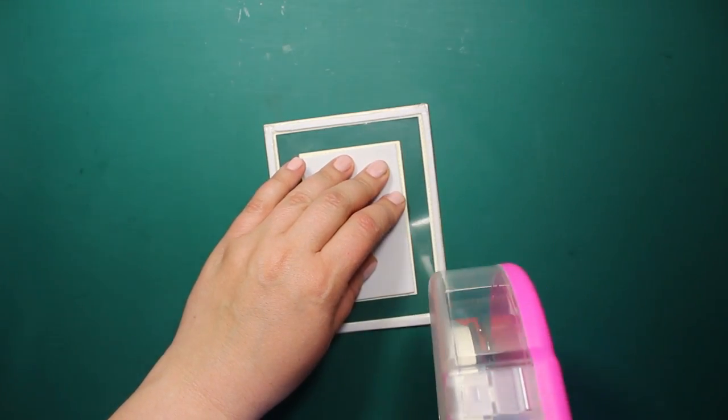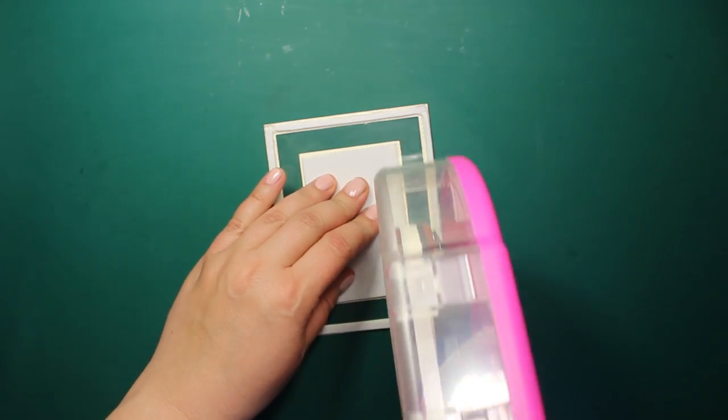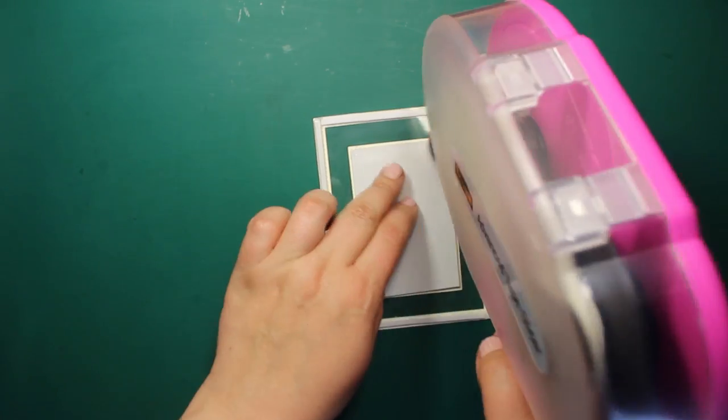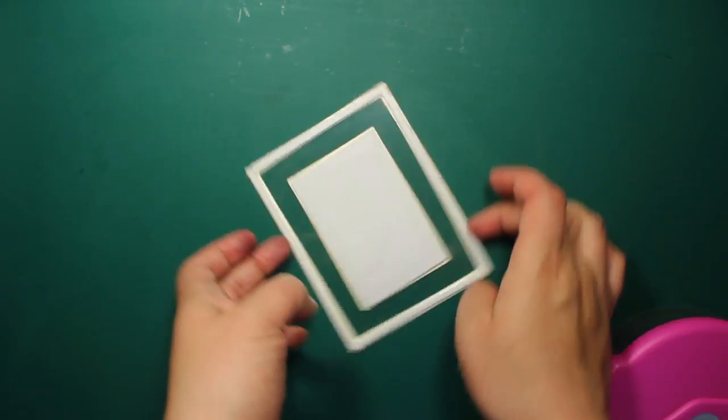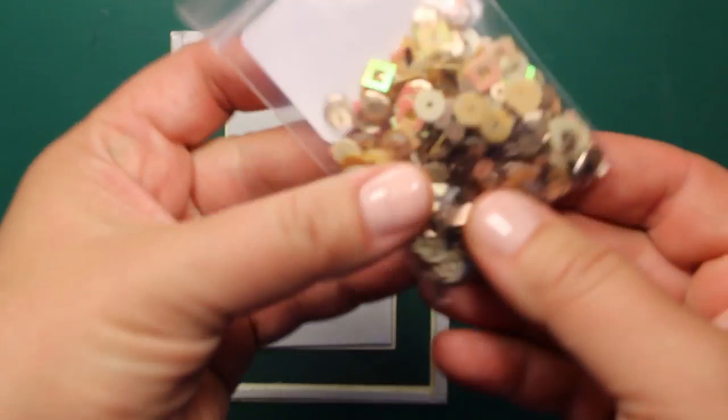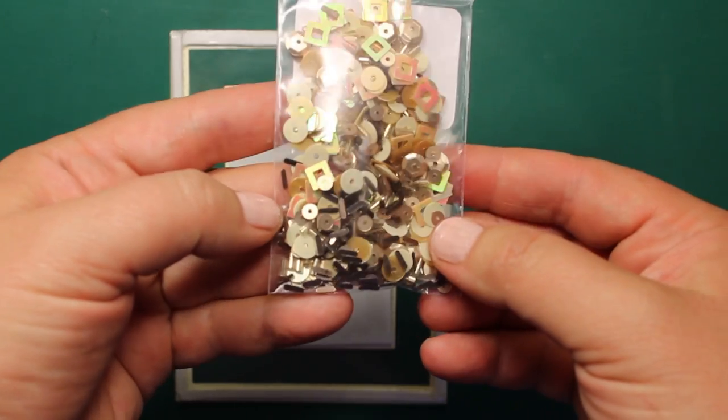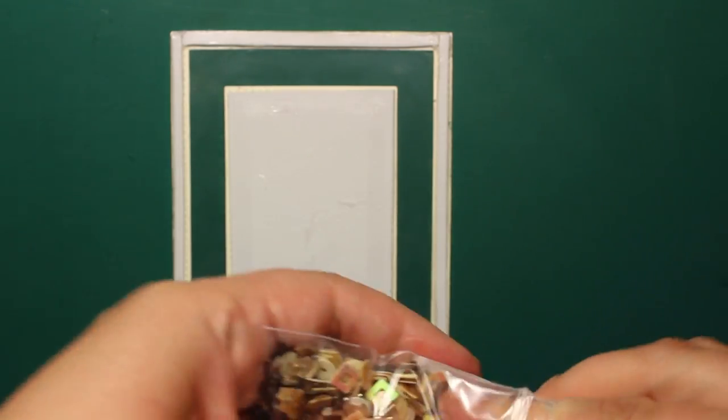So now I'm applying adhesive again and then I can fill in my shaker frame. The sequins I'm going to use are Caramel Latte by Cat Scrappiness. It's the mix of different shapes, sequins, beads and confetti of yummy colors.